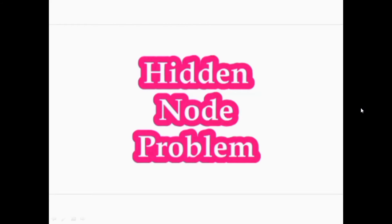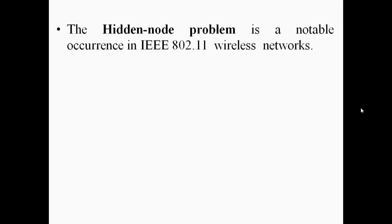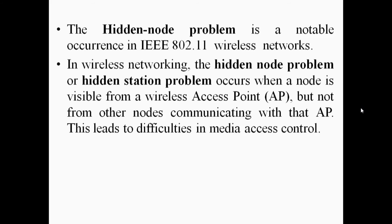What is the hidden node problem? The hidden node problem is a well-known phenomenon in IEEE 802.11 wireless networks. In wireless networking, the hidden node problem or hidden station problem occurs when a node is visible from a wireless access point AP, but not from other nodes communicating with that access point. This leads to difficulties in media access control.